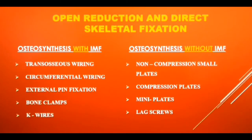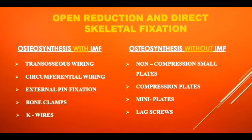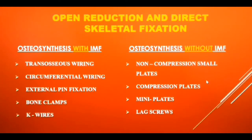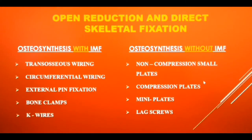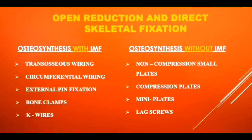Once the fracture site is opened and exposed, the fracture is first reduced to its anatomical position. After reduction, any of several techniques can be used to achieve stabilization — a process called osteosynthesis, which simply means stabilization of the two fracture ends using a bone implant, whether it be a plate, screw, pin, clamp, or wire.